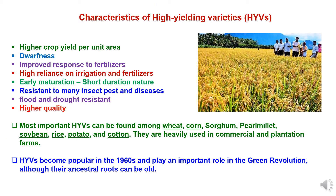High yielding varieties and hybrids of agriculture crops are characterized by a combination of various traits in contrast to conventional varieties. These high yielding varieties have a higher crop yield per unit area compared to conventional varieties. As per available data, these high yielding varieties resulted in a 20% to 50% yield increase, playing an important role in increasing food production and assuring food security. These varieties also have the characteristic of dwarfness — most high yielding crops are dwarf, and hence their plants are stronger and can withstand strong winds and high rainfall conditions.